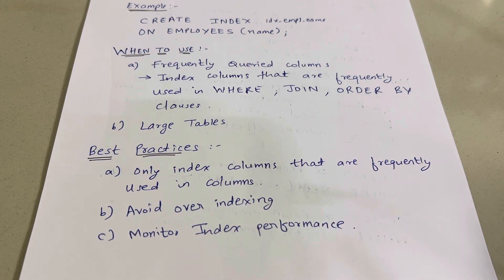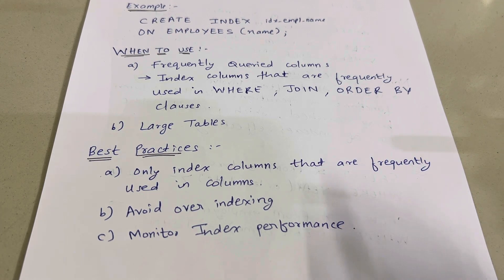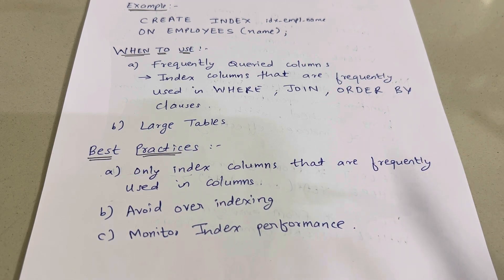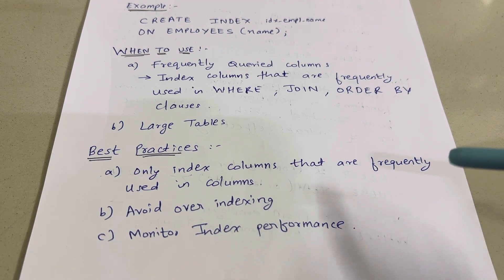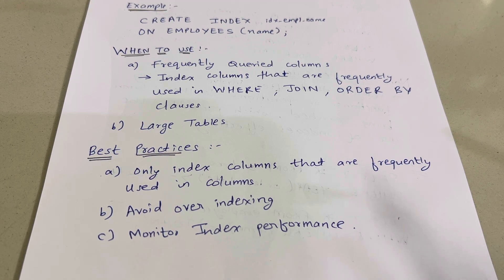Some best practices for indexes: Only index columns that are frequently used. Do not create indexes on all columns — that will slow down the query instead of improving it, because so many indexes are created on random columns. Avoid over-indexing as well, as that will also consume time. Third, monitor index performance — check if creating an index on a particular column is actually improving speed. If it is not helping, delete that index.